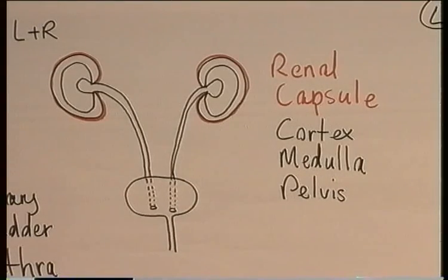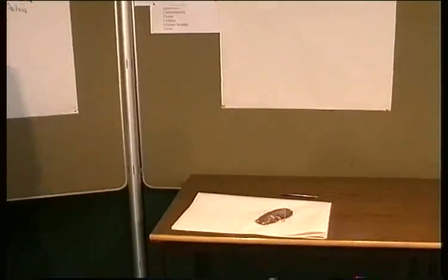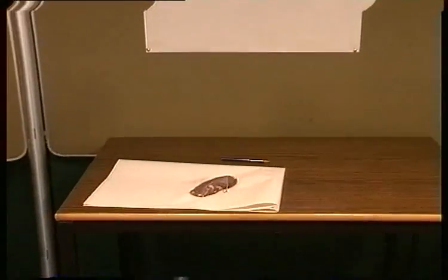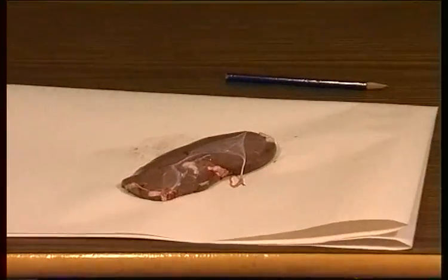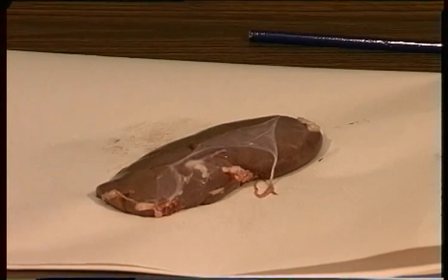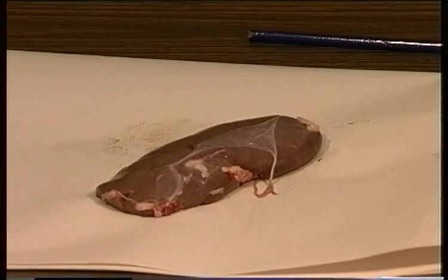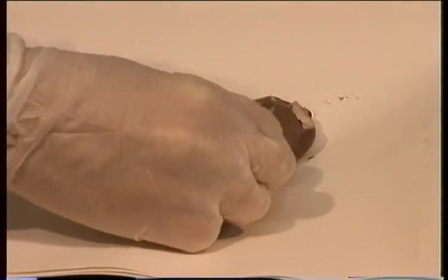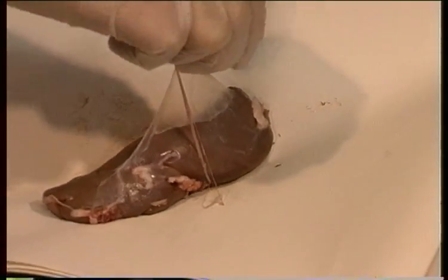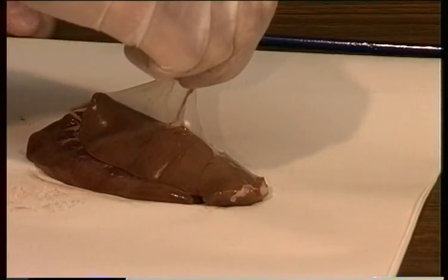We can now look at an actual kidney and see these features. In humans the kidney is about 11 centimetres long, 6 centimetres wide, and 3 centimetres thick, and usually weighs about 150 grams. On the outside you can see the renal capsule — this fibrous material — which will actually peel off from the surface of the kidney with some difficulty.